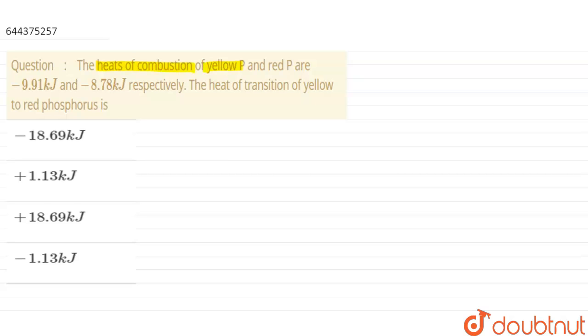The heat of combustion of yellow phosphorus and red phosphorus are minus 9.91 kilojoules and minus 8.78 kilojoules respectively. We have to find out the heat of transition of yellow to red phosphorus. So let us write the combustion of each of these phosphorus.